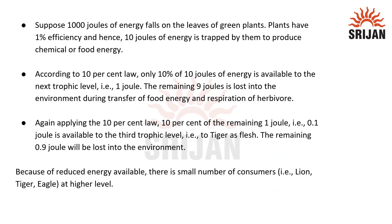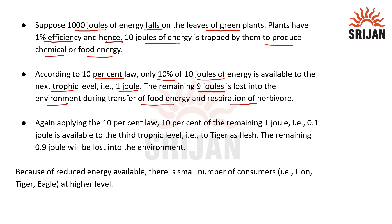Here we can recall the same example. Suppose 1000 joules of energy falls on leaves of green plants. Plants have 1% efficiency, and hence 10 joules of energy is trapped by them to produce chemical or food energy. Now, according to the 10% law, only 10% of 10 joules of energy is available to the next trophic level, i.e. 1 joule of energy would be available, whereas remaining 9 joules of energy would be lost to the environment during the transfer of food energy and respiration of herbivores.